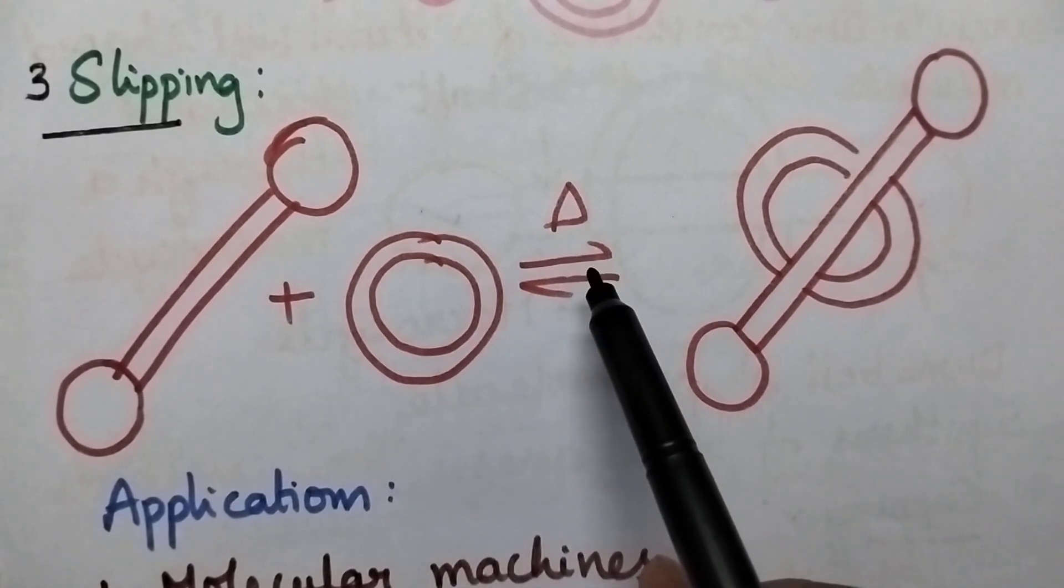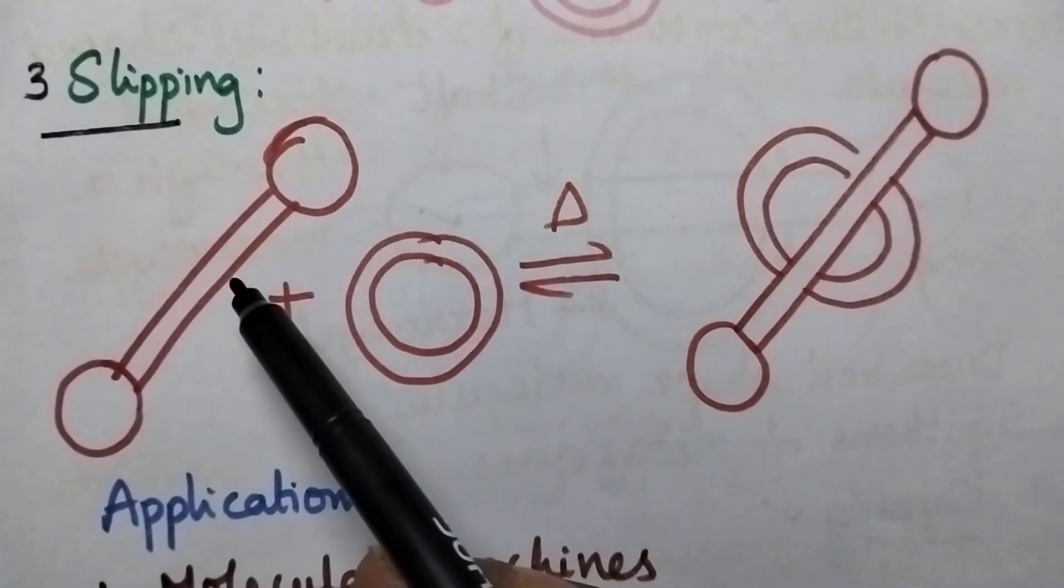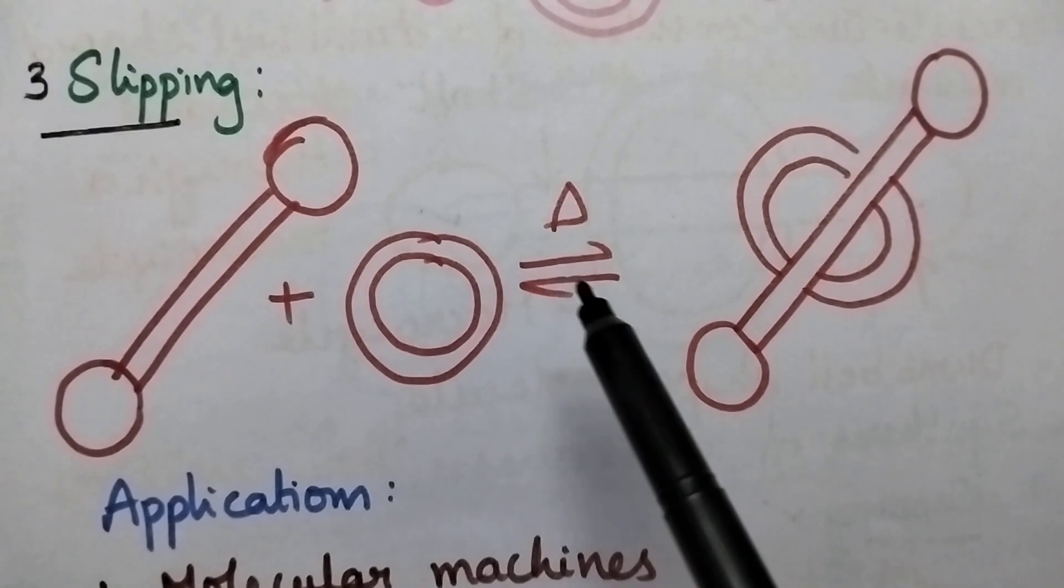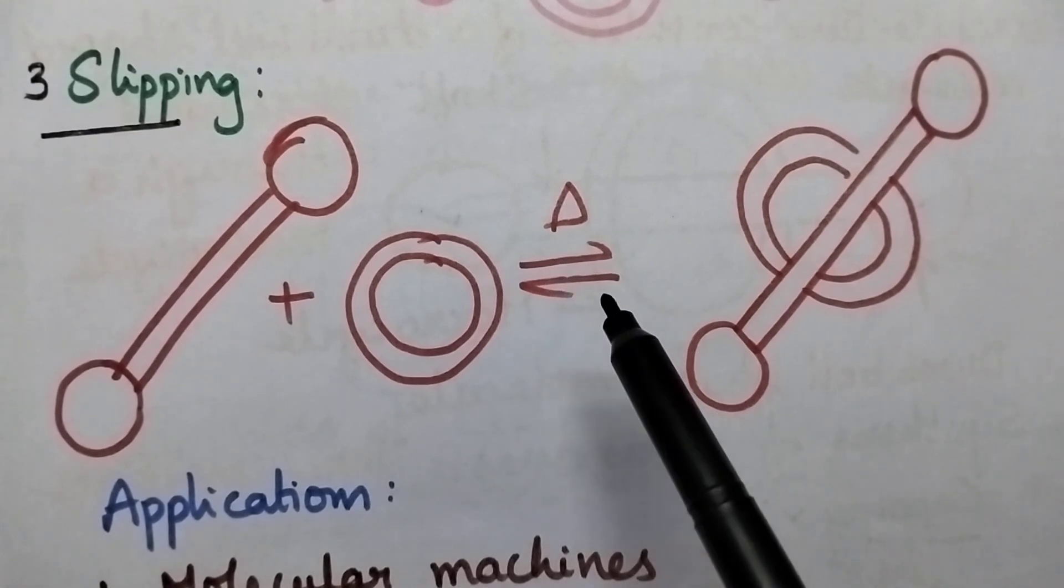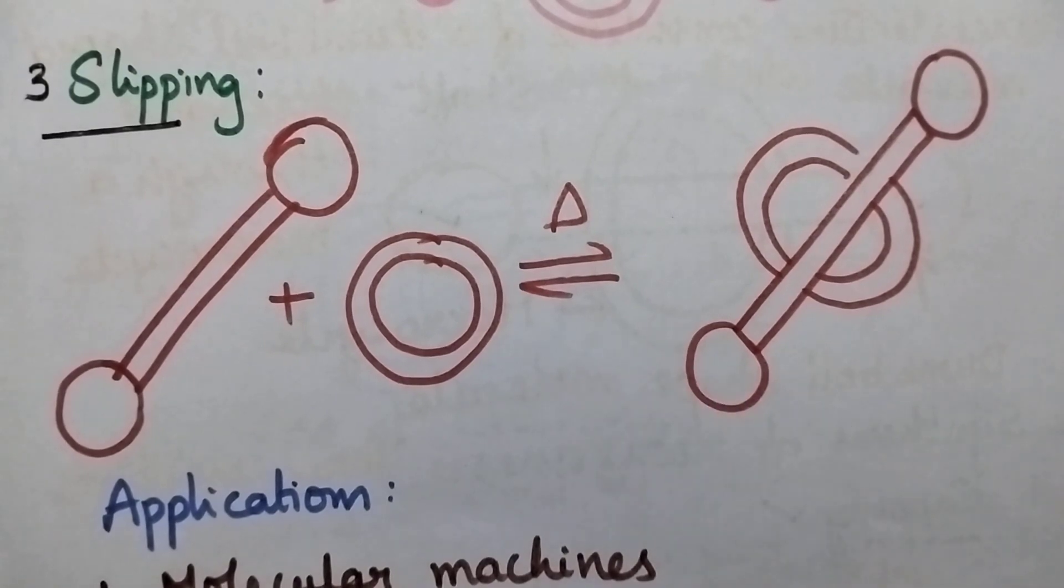So at high temperatures, slowly the macrocycle is slipped into the shaft. This process is completely reversible and hence it is a thermodynamically unstable method used for the preparation of rotaxanes.